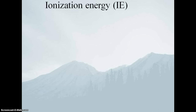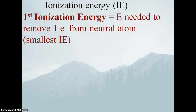The first thing we have to do is define exactly what ionization energy is. By definition, it is the energy needed to remove an electron from an atom. Now there are several different ionization energies for every atom — for each electron that you remove, it's a different ionization energy. The first ionization energy is how much energy it takes to remove the first electron from a neutral atom.